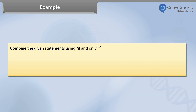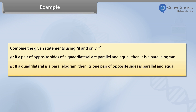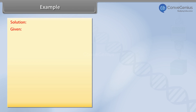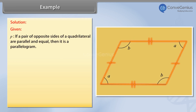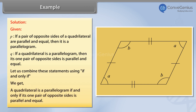Example. Combine the given statements using if and only if. P is a statement that if a pair of opposite sides of the quadrilateral are parallel and equal, then it is a parallelogram. Q is a statement that if a quadrilateral is a parallelogram, then its one pair of opposite sides is parallel and equal. Combining these using if and only if, we get: A quadrilateral is a parallelogram if and only if its one pair of opposite sides is parallel and equal.